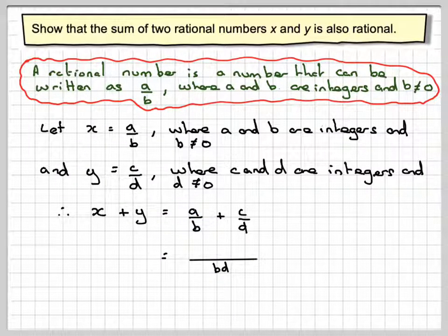This a will need to be multiplied by d. And since this has been multiplied by b, the c will need to be multiplied by b, so we get ad plus bc over bd.